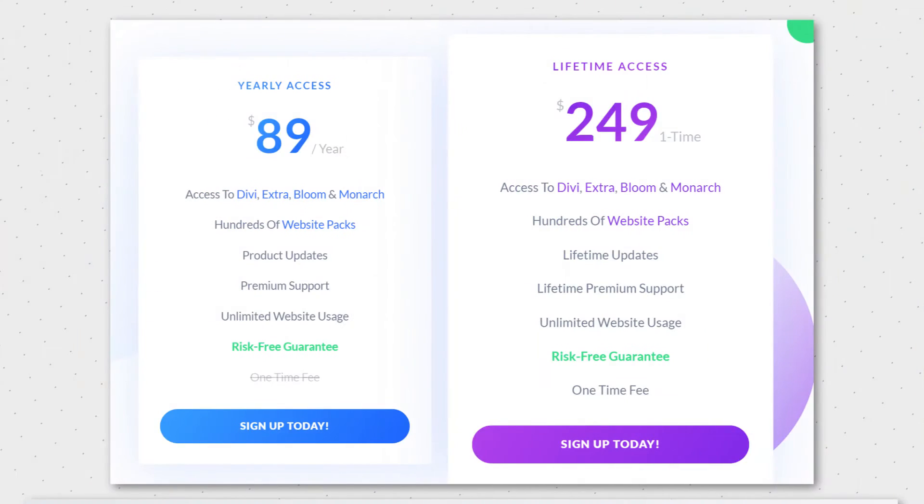A possible disadvantage here is the cost, because Divi builder comes as part of the $89 Elegant Themes membership, which is quite a lot if you compare it to 10Web's $10 per website rate. And another disadvantage here is that this builder is shortcode based, which means if you ever get to delete it, it will leave behind some shortcode, which you will then have to delete yourself.